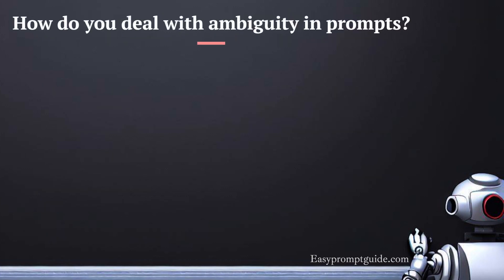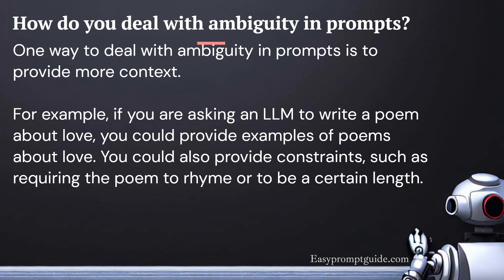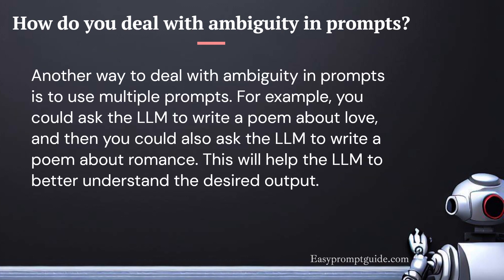How do you deal with ambiguity in prompts? One way is to provide more context — for example, if you are asking an LLM to write a poem about love, you could provide examples of poems about love. You could also provide constraints, such as requiring the poem to rhyme or be a certain length. Another way is to use multiple prompts — for example, asking the LLM to write a poem about love and also about romance — to help the LLM better understand the desired output.